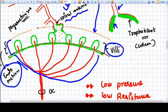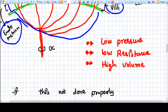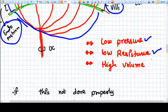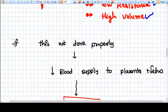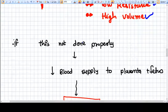Because they make the lumen wide, the spiral arteriole eventually becomes a low pressure, low resistance, and high volume vessel, so that the blood supply to the fetus can be very easily achieved. But in some cases, this process which is called trophoblastic invasion is not achieved.